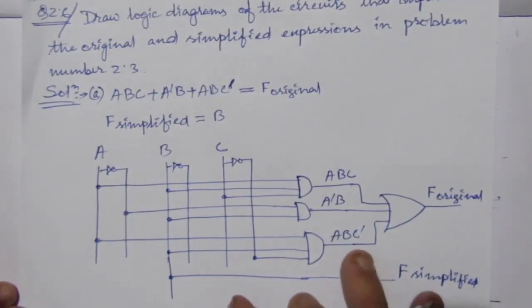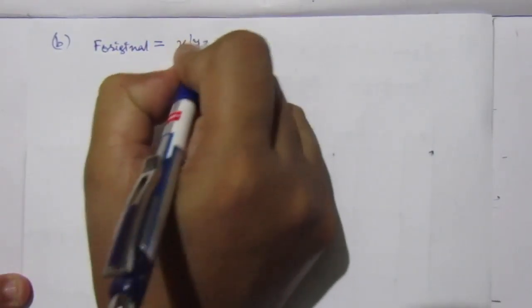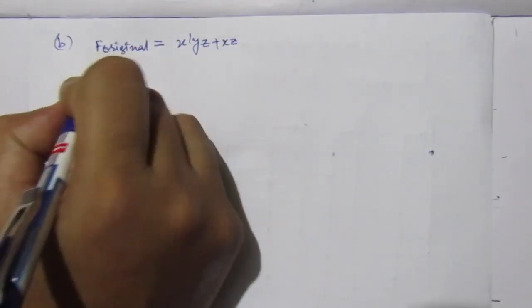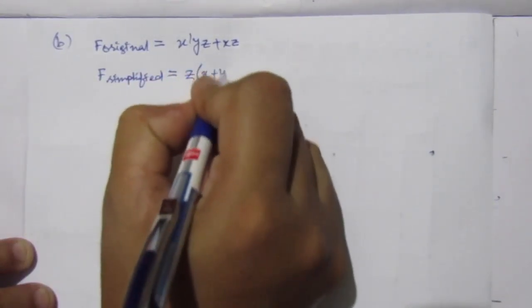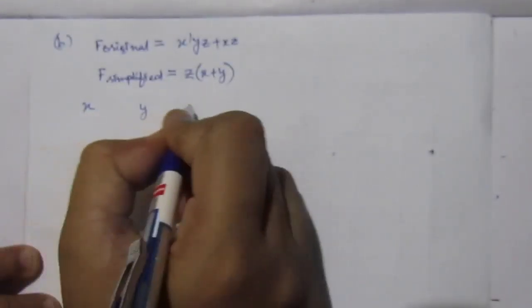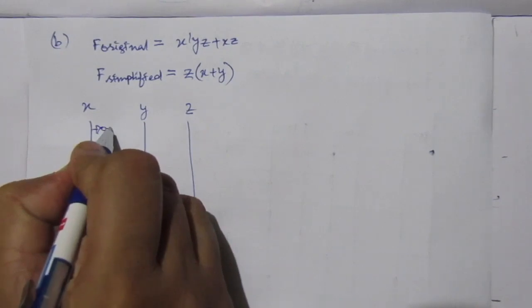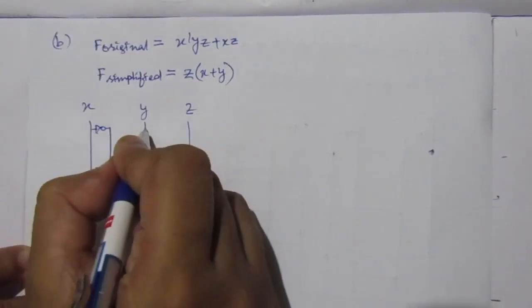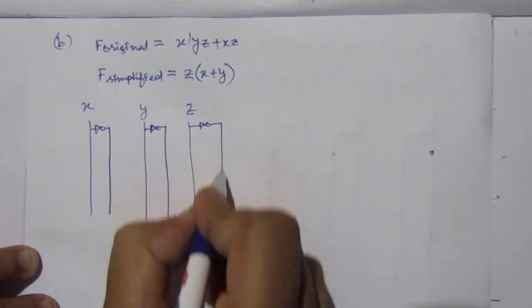Now for part B, F original equals X̅YZ + XZ, and F simplified equals Z(X + Y). We have three inputs X, Y and Z, so draw three lines. From those lines find the complementary lines using inverters: you get X̅, Y̅ and Z̅.